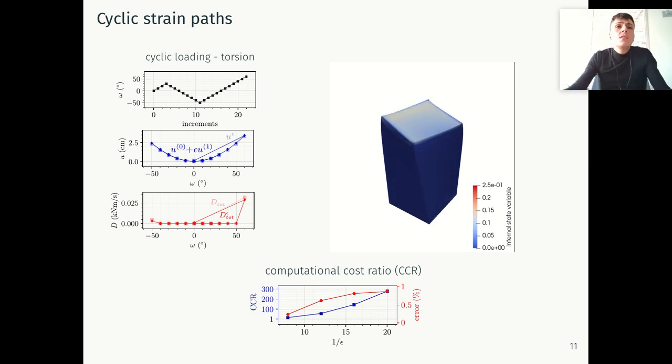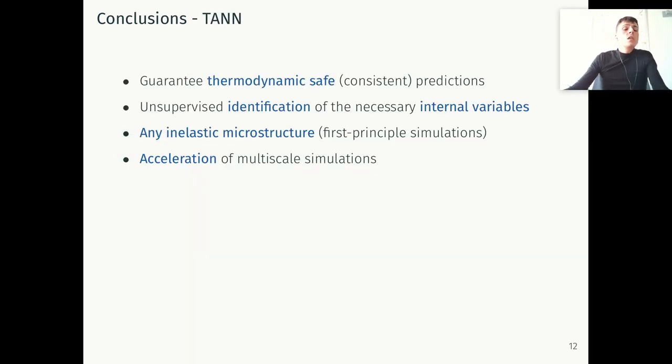I'd like at this point to arrive at the conclusion. The thermodynamic-aware artificial neural network that we've seen, that we call TANN, guarantees thermodynamic-safe consistent predictions, and for the first time, this applies also for complex materials. Of course, one of the main contributions of this work is the unsupervised identification of the necessary internal state variables and the state space of the material by relying on thermodynamic-aware dimensionality reduction techniques.